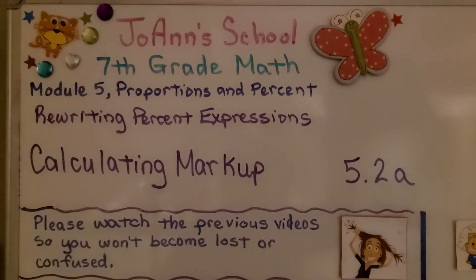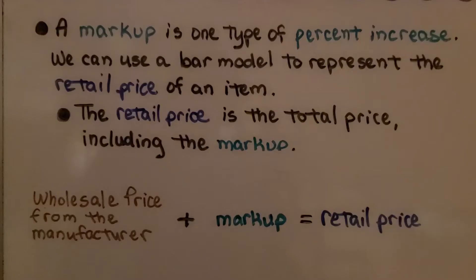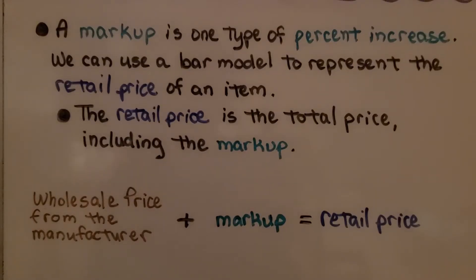Lesson 5.2a: Calculating Markup. A markup is one type of percent increase. We can use a bar model to represent the retail price of an item. The retail price is the total price, including the markup. We have a wholesale price from the manufacturer or supplier plus the markup that's equal to the retail price.